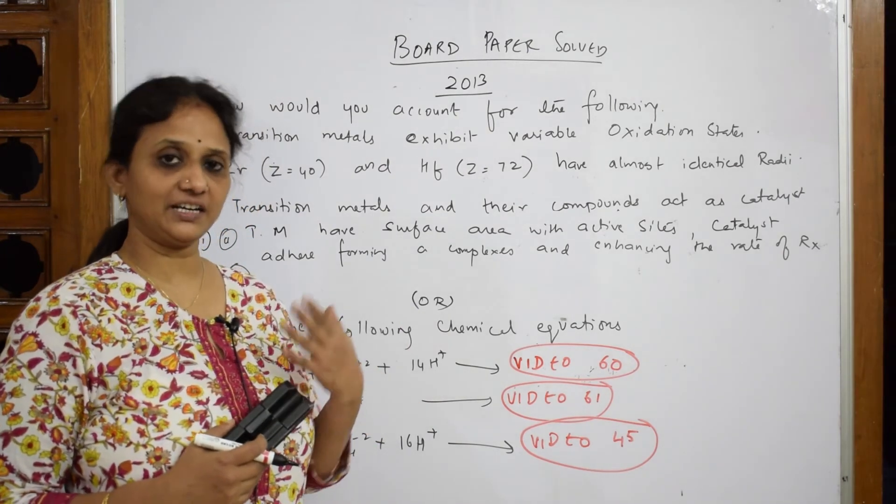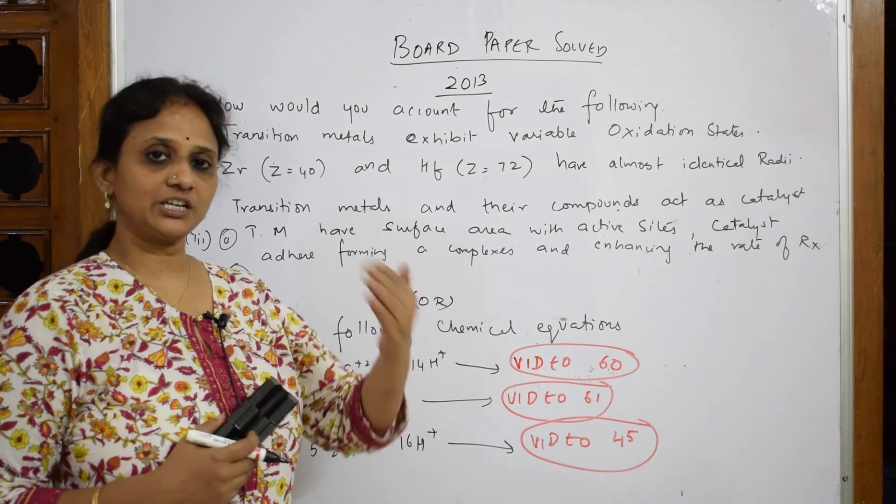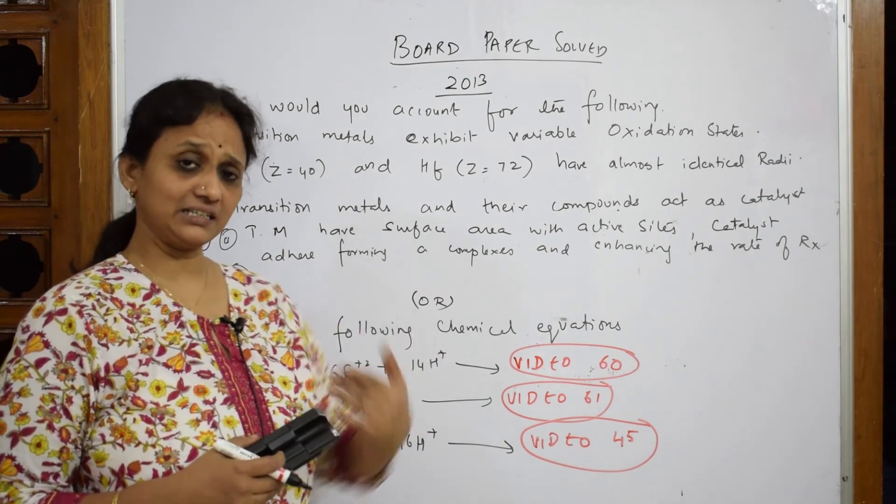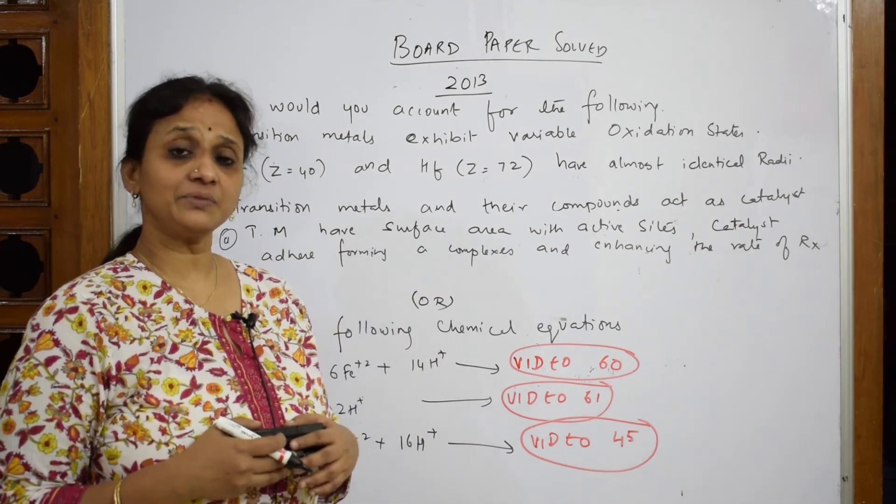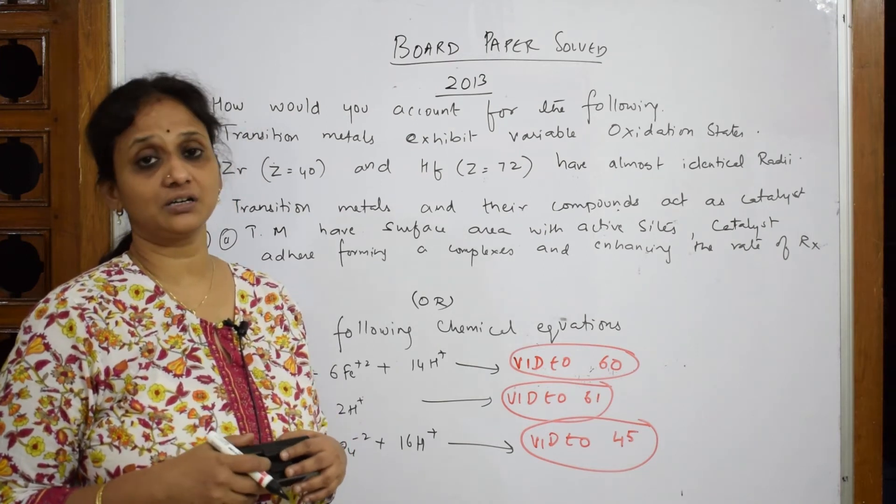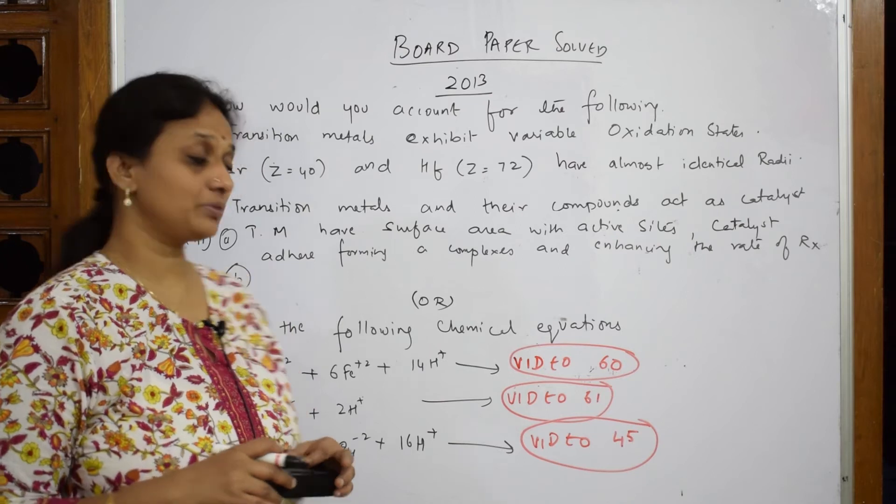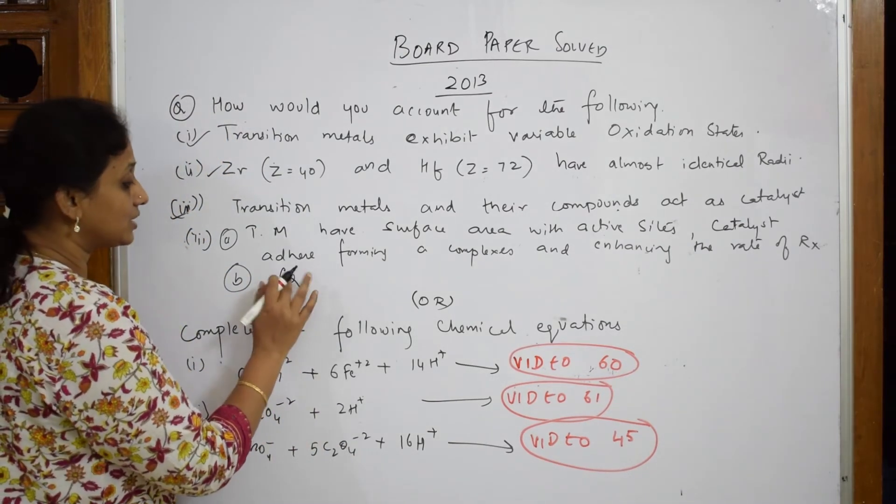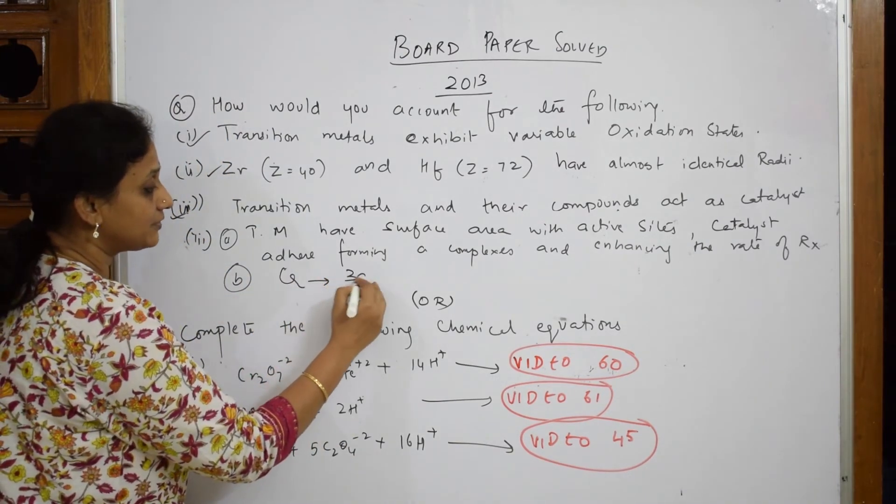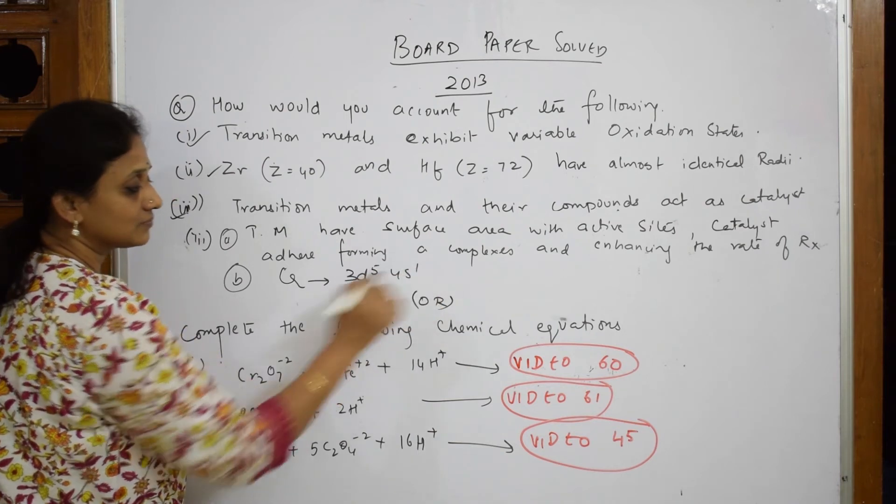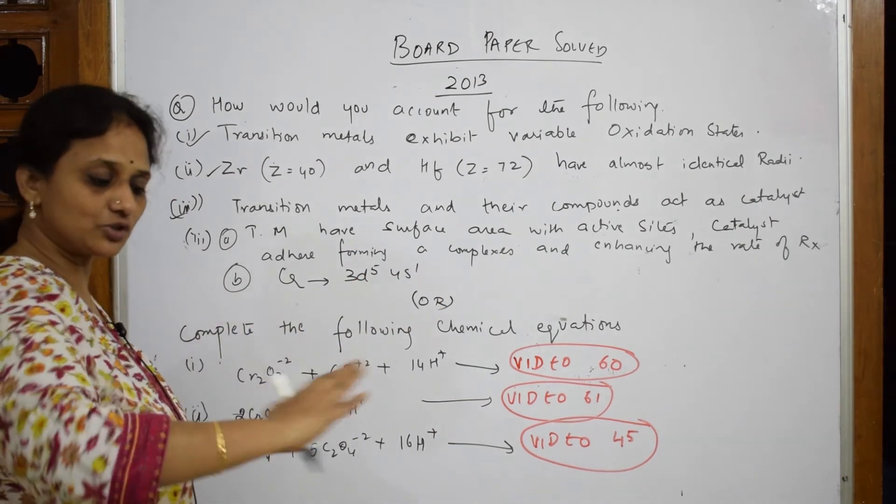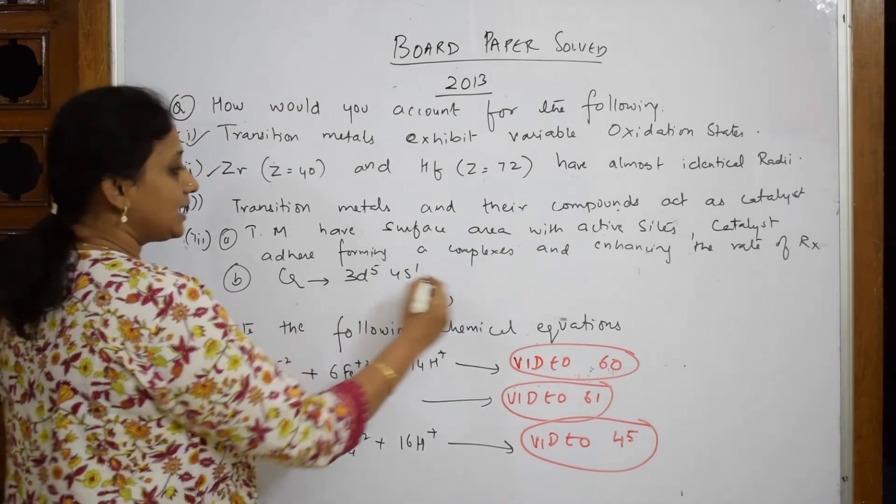Now when I have to see the configuration of transition elements, let's take scandium. You are starting from 3d and 4s. So one electron keeps adding to the inner d electron. So when I am reaching configuration of chromium and copper. So what is happening in chromium? In chromium you have a configuration of 3d5, 4s1. It has become uneven isn't it? When you reach chromium it has become uneven.